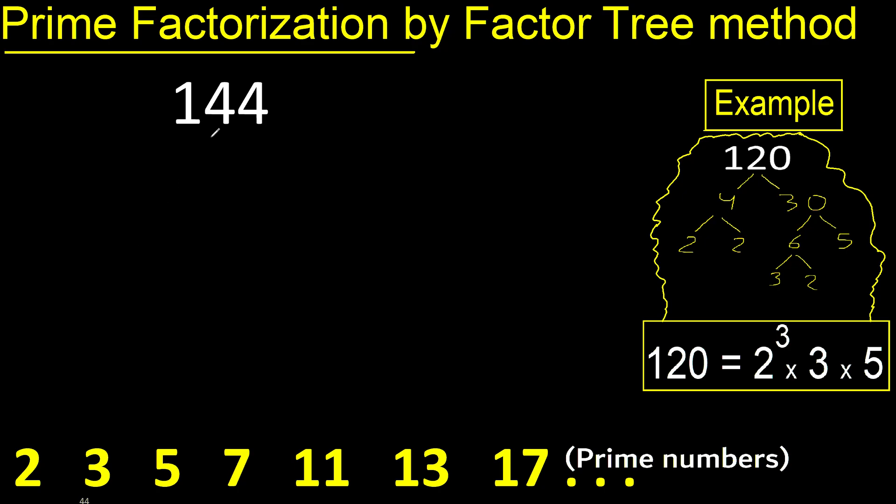Prime factorization. Two numbers that multiply are 144. Or like this, 144 can be divided by 2 because the last digit is even.